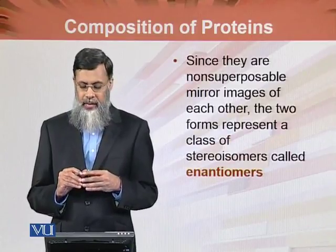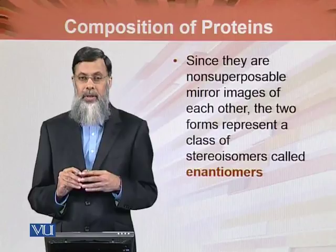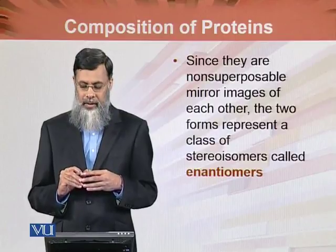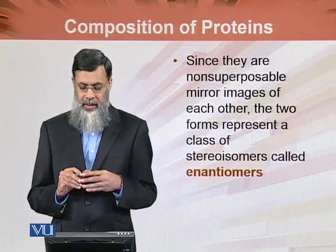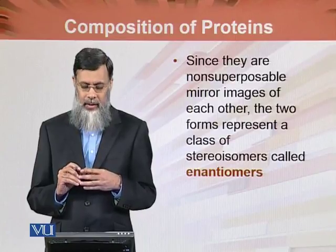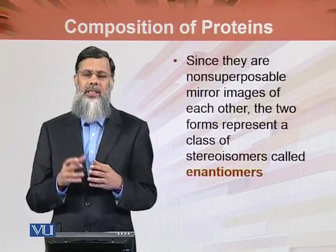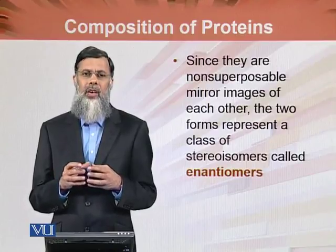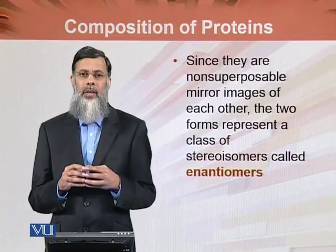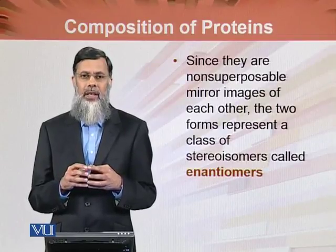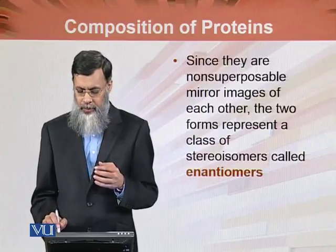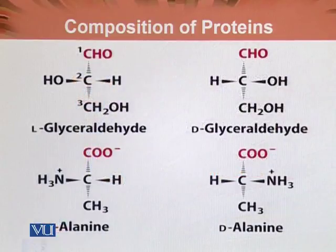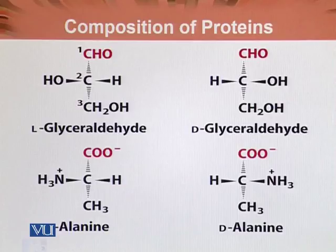Since D and L forms are non-superimposable mirror images of each other, the two forms represent a class of stereo isomers called enantiomers, as we have discussed in detail. Enantiomers are stereo isomers that are non-superimposable mirror images of each other. This is the diagrammatic presentation of D-glyceraldehyde, which is the reference point as discussed in carbohydrate chemistry.